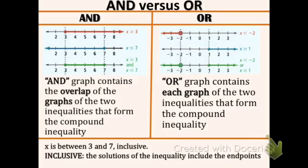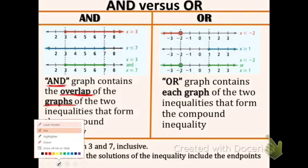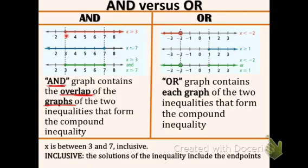First, an AND graph contains the overlap of the graphs of the two inequalities that form the compound inequality. As you can see right here, we have one inequality going this way and we have another inequality going to the left.